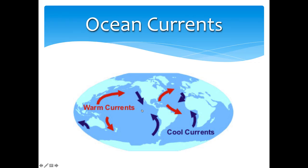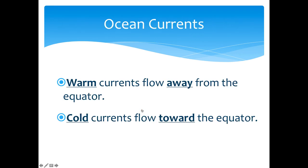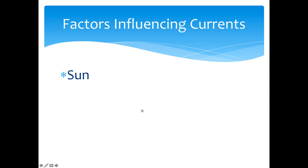The cooler currents form as warm air moves away from the equator, cools, and drops back down, creating these big large conveyor belts of wind and convection moving warm air and cool air all around the globe. So the warm currents flow away from the equator and cold currents flow toward it.